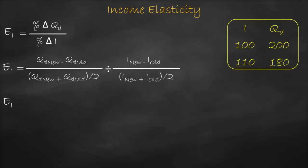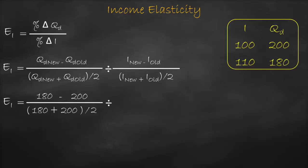Let's substitute with numbers. Our new quantity demanded is 180 minus 200, divided by (180 plus 200) divided by 2, divided by new income 110 minus old income 100, divided by (110 plus 100) divided by 2.